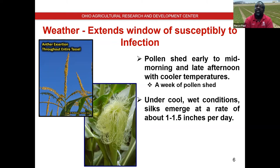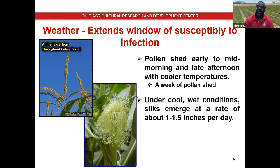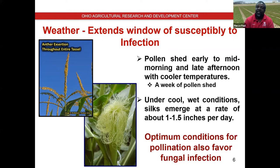On cool, wet conditions, silk emerges at a rate of about an inch to inch and a half per day. If conditions get hot and dry, the silk can dry out and is not as receptive to pollen. The fungus that causes Gibberella ear rot and produces vomitoxin enters the ear via the silks. Spores land on the silk and hitch a ride with the pollen, grow down the silk into the ovaries where they infect, grow, and produce mycotoxins. Optimum conditions for pollination and silk elongation also favor infection by the fungus.